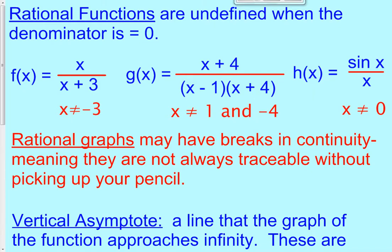Rational functions are undefined when the denominator is 0. It's a math rule — you cannot divide by 0. So whenever you graph these, you've got to make sure that you never divide by 0, so this right here cannot equal 0.